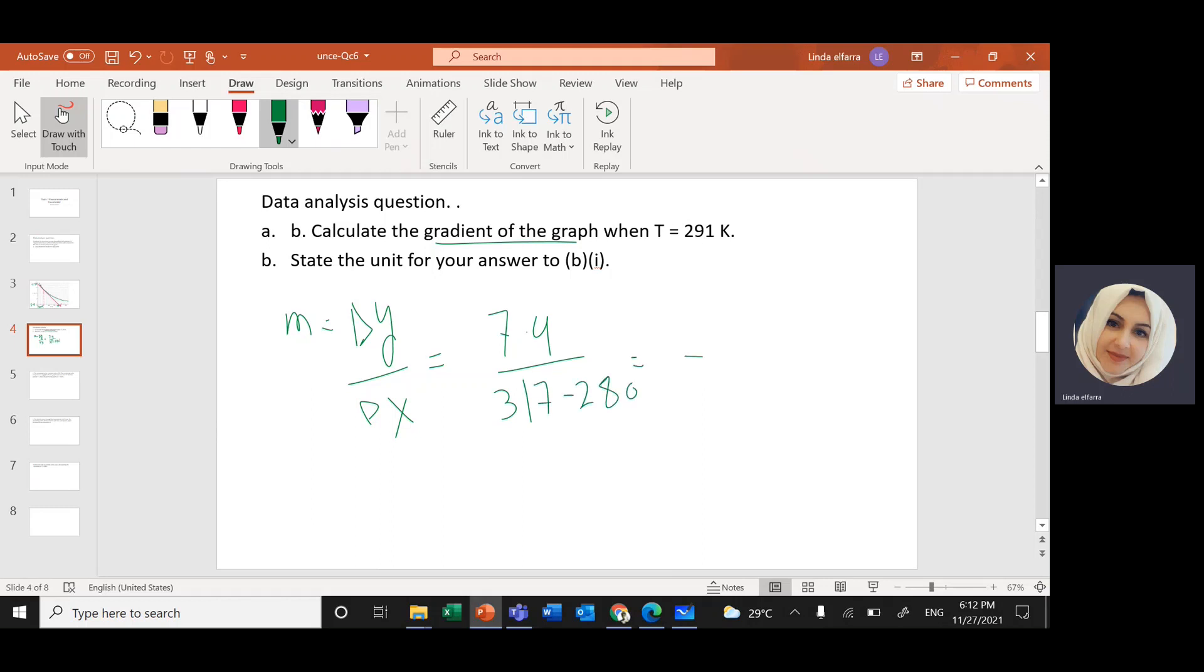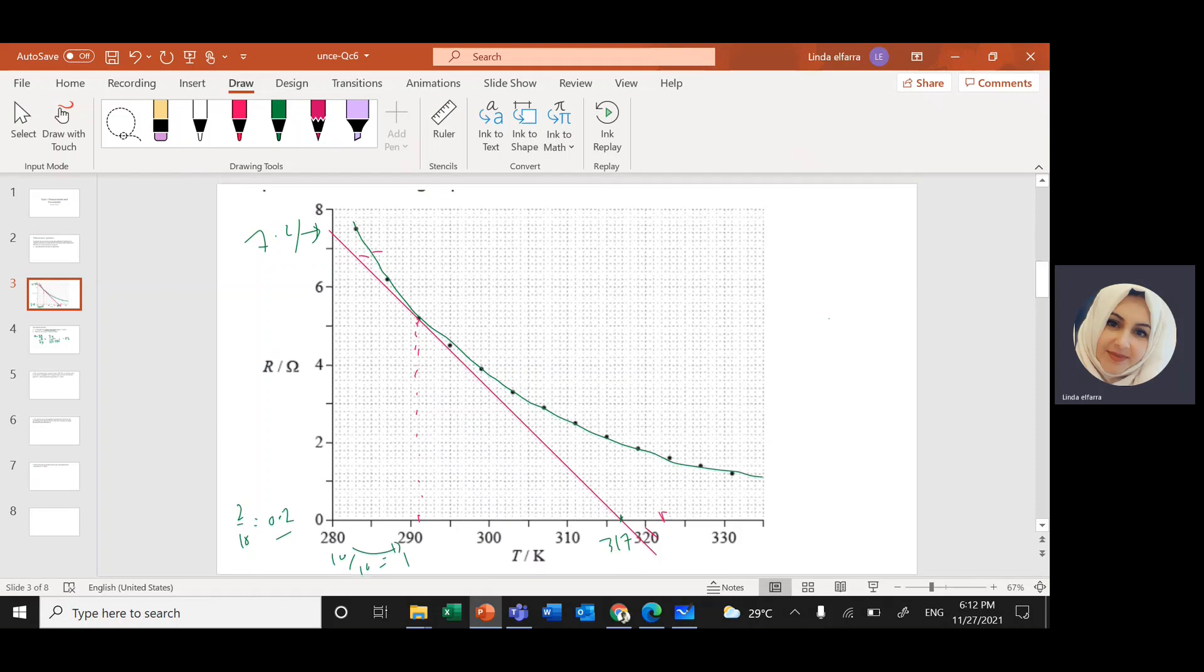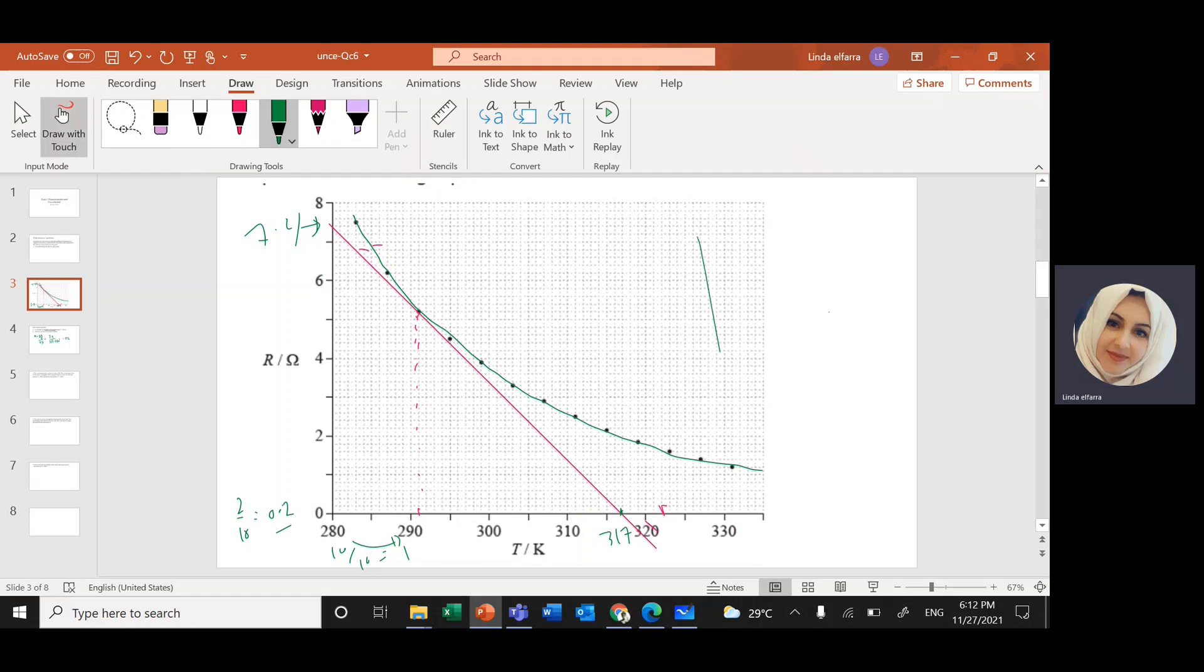It will give me minus 0.2 minus because here I have the gradient is moving down. So I should have a negative slope or negative gradient. If the slope is moving up like this, it will be positive. The slope is positive. If the slope is horizontal, if the line is horizontal, so the slope for a horizontal line is 0. If the line is moving down, so m or the slope is negative.